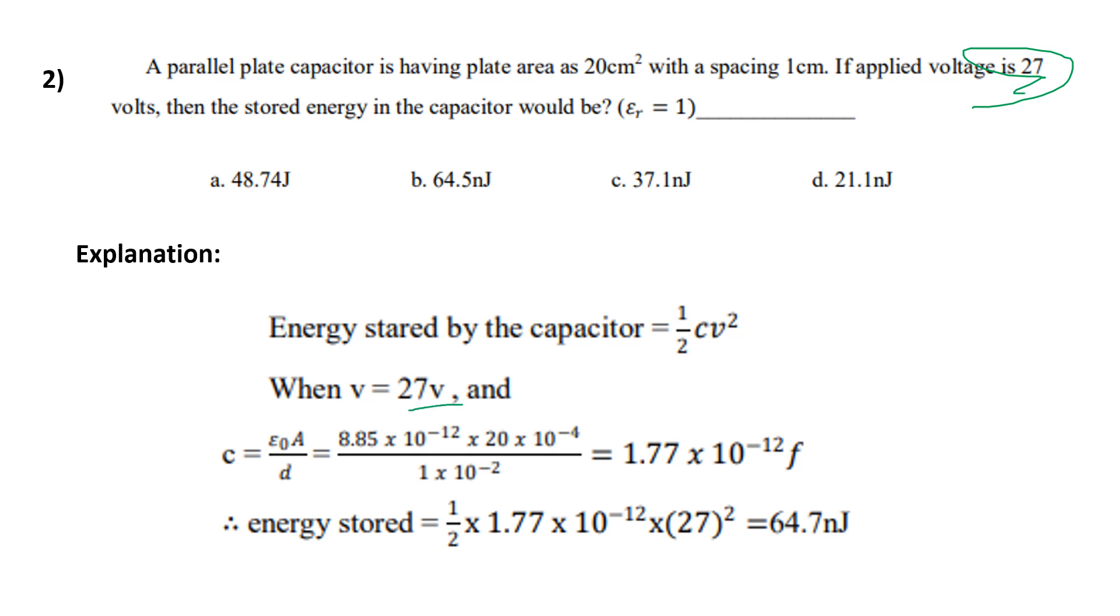And C capacitance equals epsilon naught A divided by d. Substitute the values. A is the plate area, 20 centimeters squared, 20 into 10 power minus 4, divided by d value 1 centimeter, spacing is 1 into 10 power minus 2.